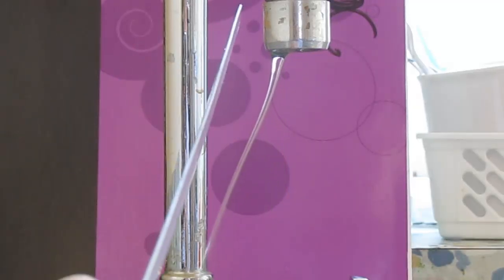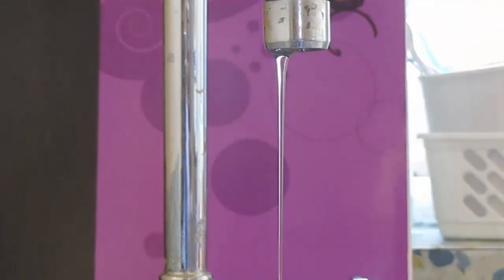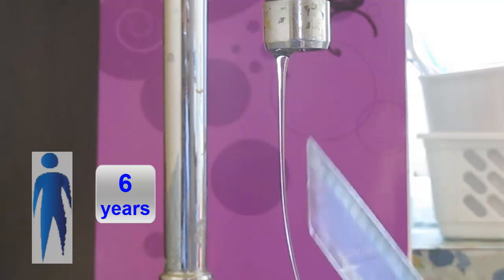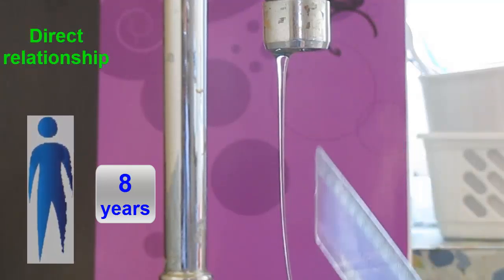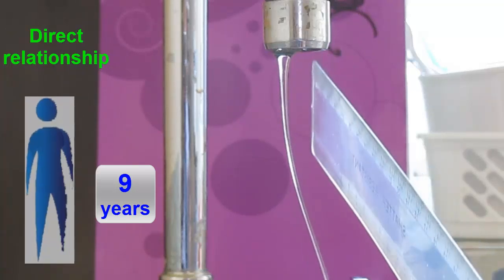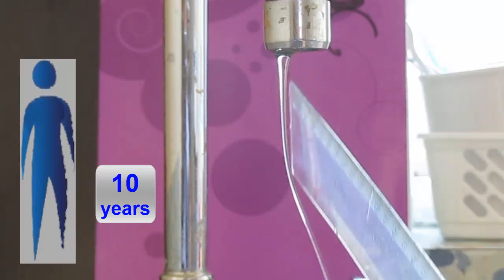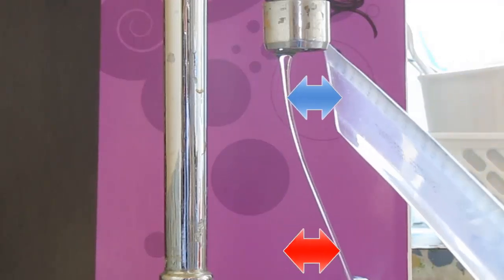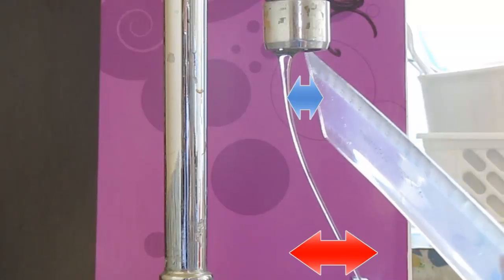There are lots of relationships in nature — lots of things that can change depending on other things. For example, you get taller as you get older. This is called a direct relationship, because as your age increases, your height does too. Can you think of any other relationships? The relationship between electric force and separation distance is one of nature's most important.